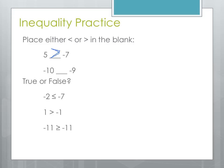For our second problem, we have negative 10 and negative 9. We want to open toward the larger of these two numbers. Remember, negative 9 is farther to the right on the number line than negative 10. If we draw our number line with 0 here, negative 9 is here and negative 10 is further left. So negative 9 is farther to the right and therefore greater than negative 10. We open toward negative 9 and point toward negative 10.